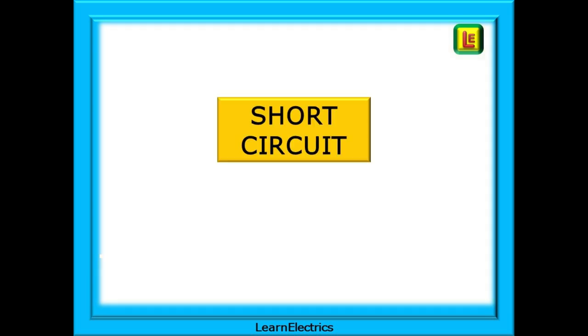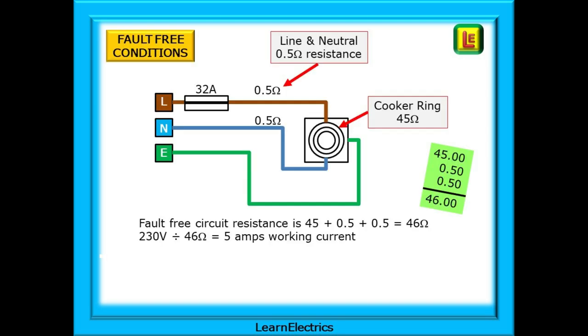A short circuit is completely different. Let's look at this. In this example, we have a cooker circuit protected by a 32-amp protective device. There are no faults on the circuit. Looking at just one cooker ring, we see that it has a resistance or impedance of 45 ohms and each of the line and neutral conductors has a resistance of half an ohm. Current flows along the line conductor, through the fuse, through the cooker ring, where it loses its energy as it makes the ring hot and then flows back along the neutral. Using Ohm's law, we can calculate the current flowing. 230 volts divided by 46 ohms gives us a current of 5 amps, far less than the 32-amp breaker. All is okay.